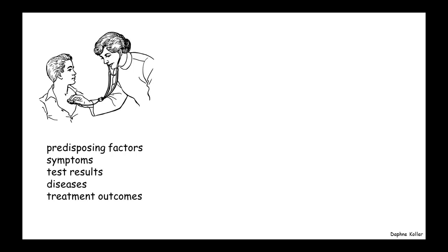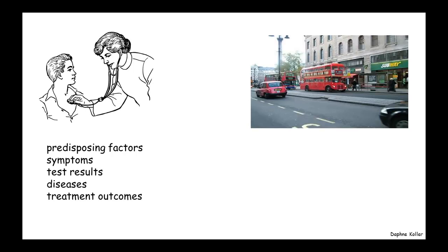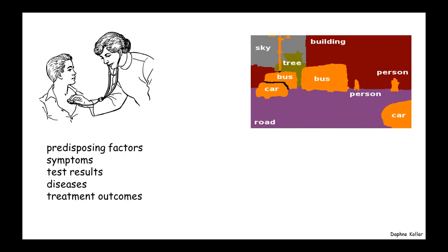A very different application that is in common use today is in the area of computer vision. Here we might have an image such as this, and we'd like to figure out what's in it. So we'd like to label, for example, different regions of the image as representing different semantic categories. Car, road, sky, tree, and so on. Why is this hard? It's not hard for humans, but it's hard for computers. Because there's lots and lots of pixels, each of which needs to be labeled. And the computer's not really good at looking at a pixel and figuring out what it belongs to.